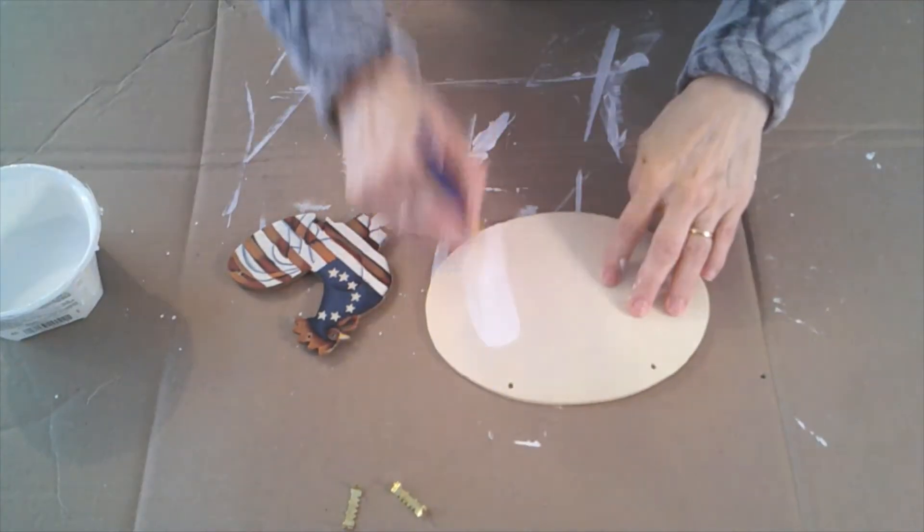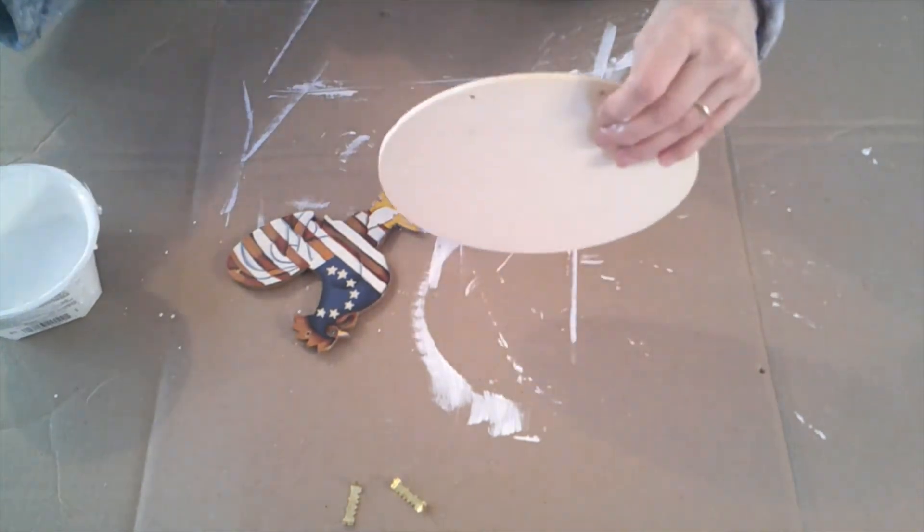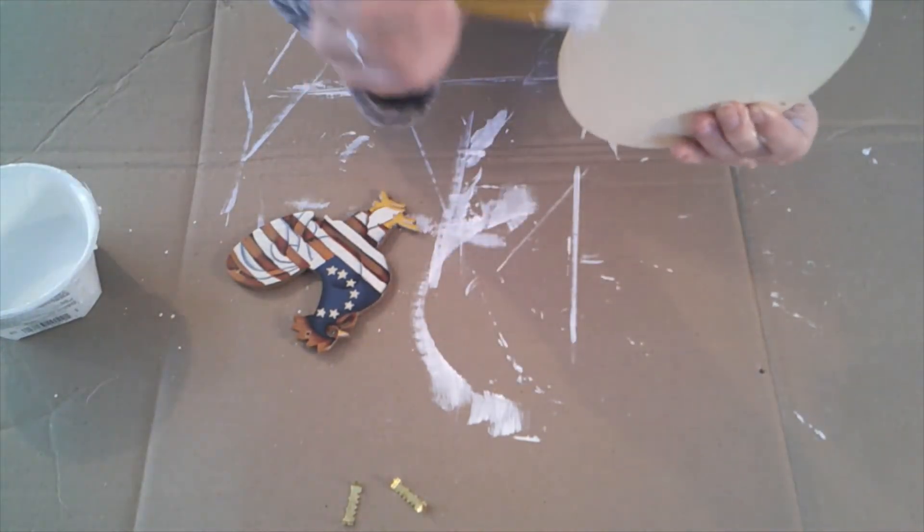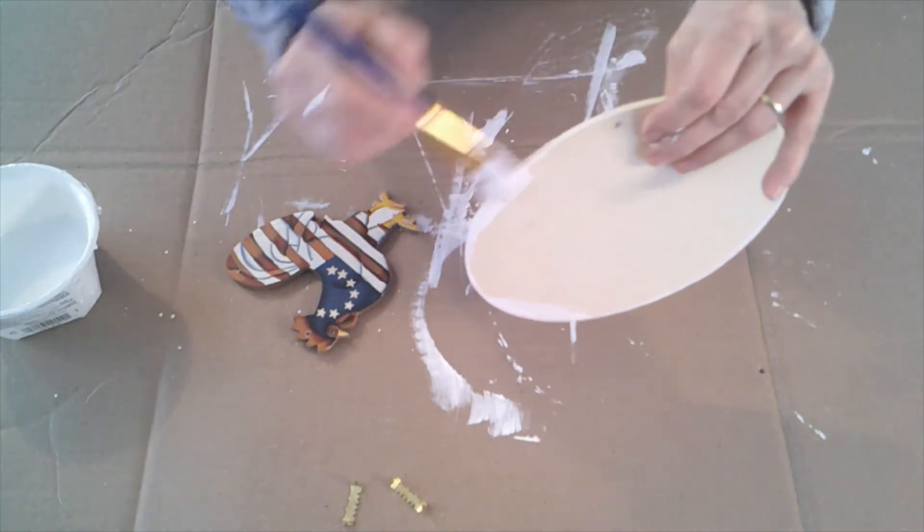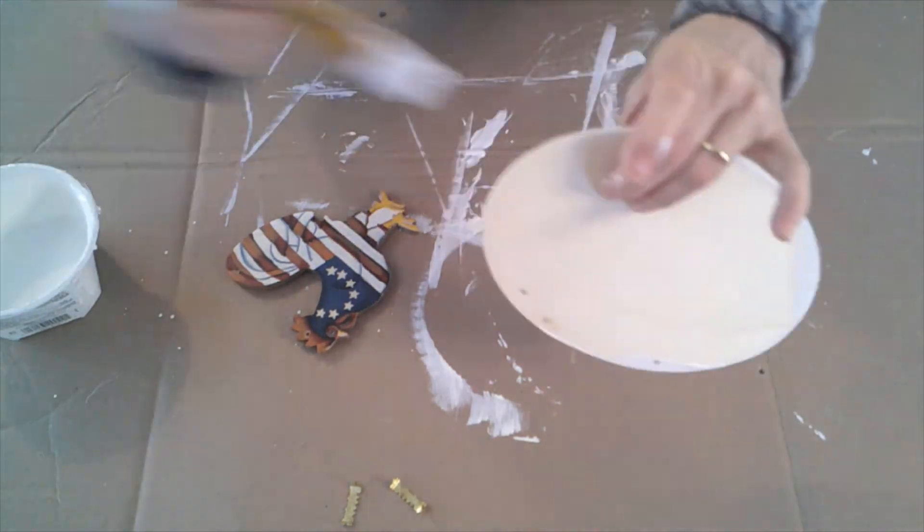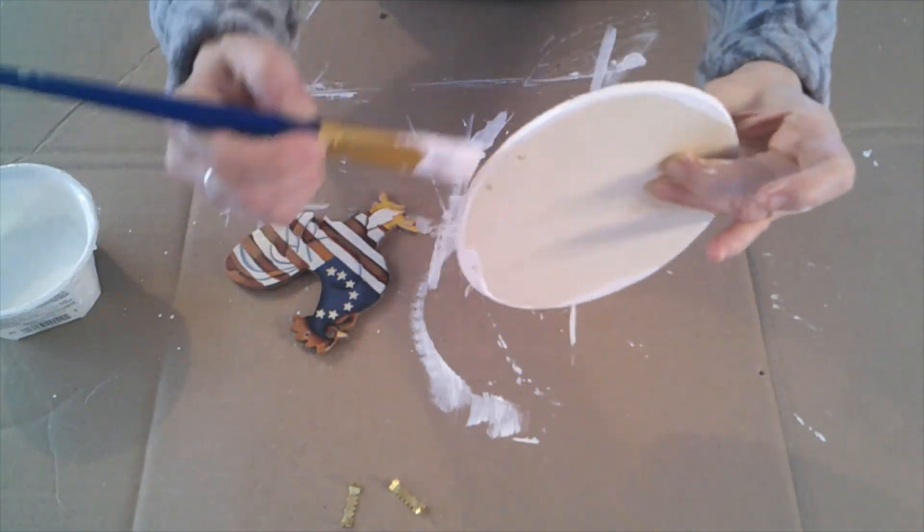This might be my favorite one of the day. I started out with an oval wood sign. I think it was from Dollar Tree but it could have been from Walmart. I've had it in my stash for quite some time. I painted it white and this took two coats.